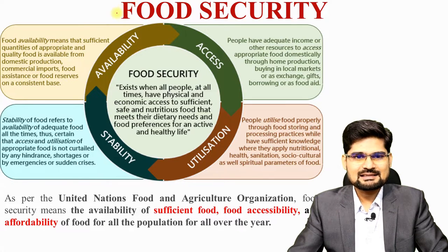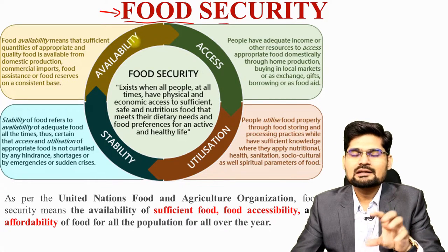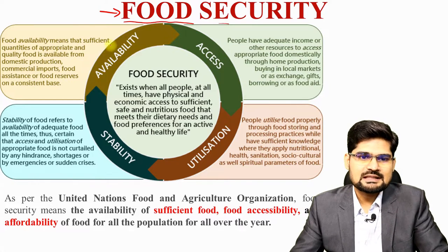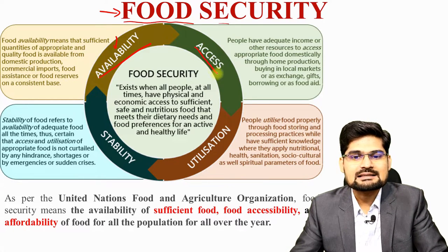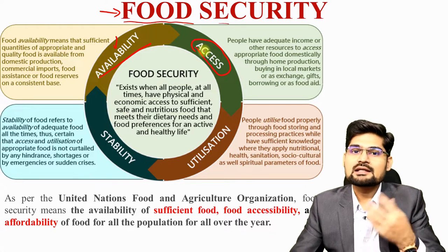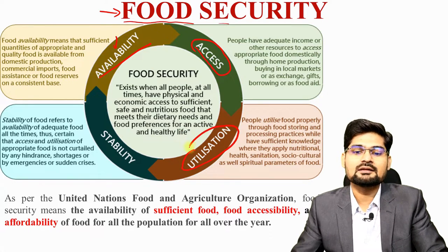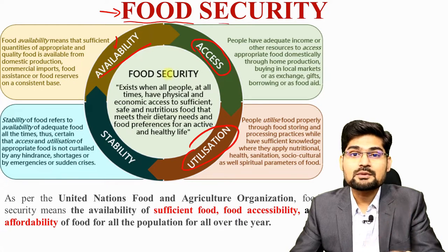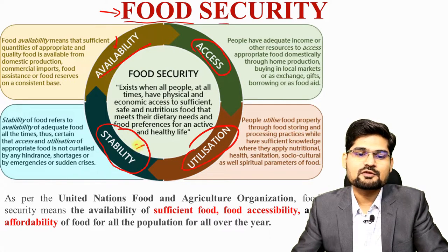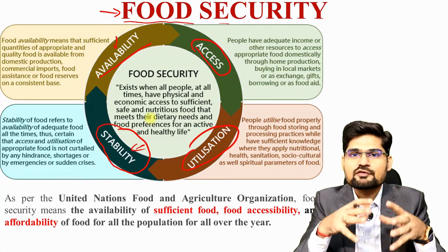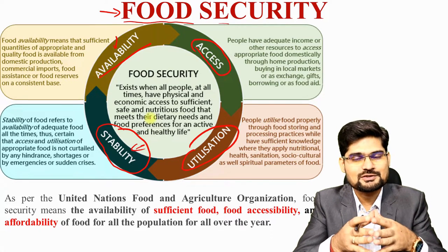Let's discuss the challenge of food security. When we consider food security in economic geography, there are a few factors. First is the availability factor — how available is food. Then there is the accessibility factor — does every common man have access to food even if it is available? Then we have the utilization factor — even if food is available and accessible, are we utilizing it properly? And then there is stability, the fourth pillar — having stable and sustainable food sources.